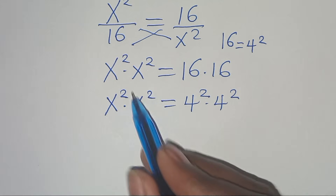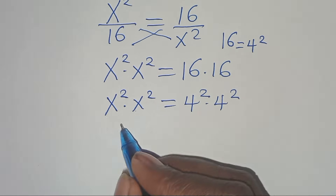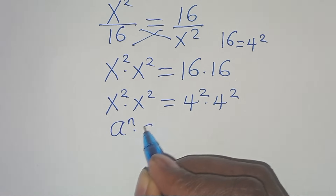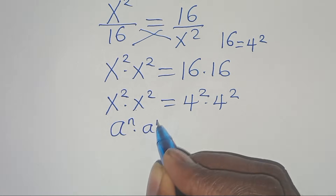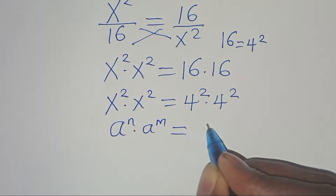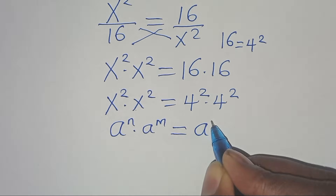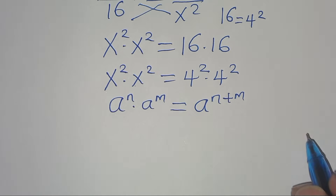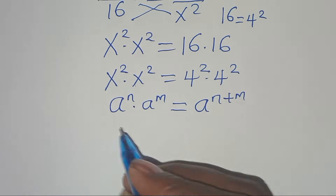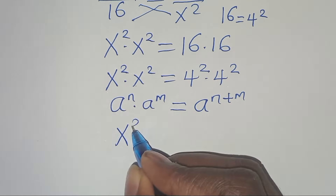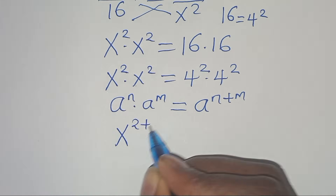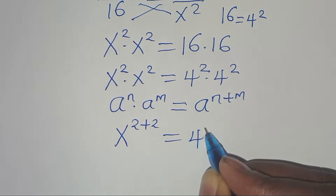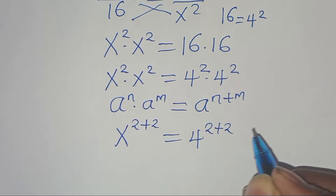Now, x² times x² is in the form a^n times a^m, which we can express as a^(n+m). Applying this exponent property, we get x^(2+2) equals 4^(2+2).